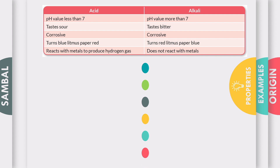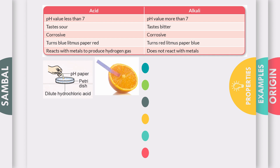If you look at the diagrams below, these are examples of tests that can be carried out to test the properties of acid and alkali. For the first one, you put a pH paper into a dilute hydrochloric acid. Or you can use a litmus paper, either red or blue. You can use a blue litmus paper to test on acid, so it will change from blue to red.